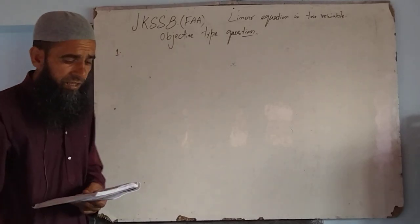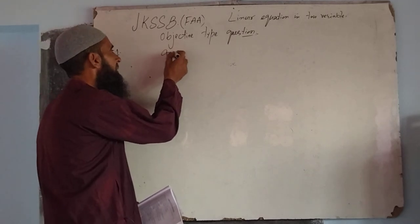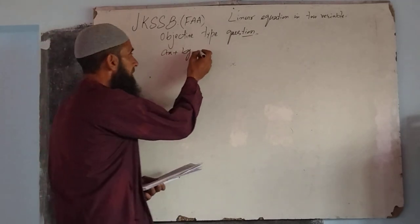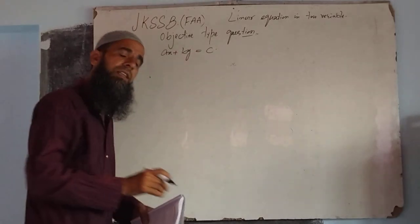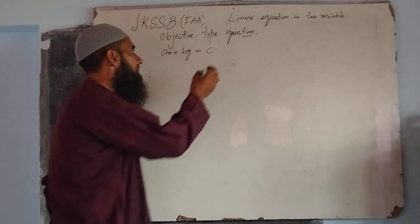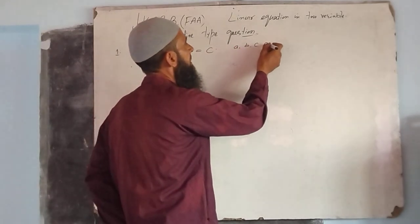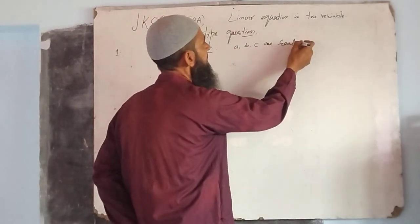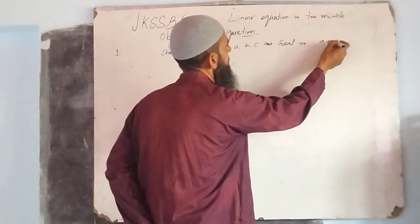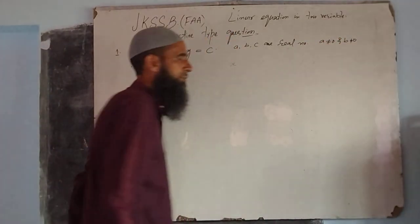The linear equation is ax plus by is equal to c. This is a linear equation where a, b, c are real numbers, and a is not equal to zero and b is not equal to zero. This is our first objective.